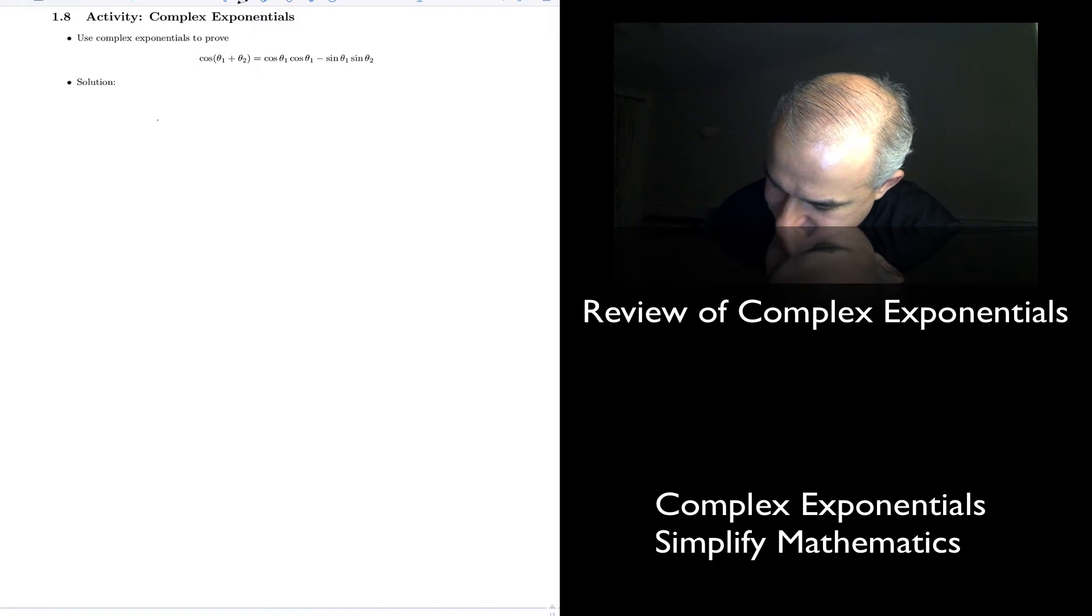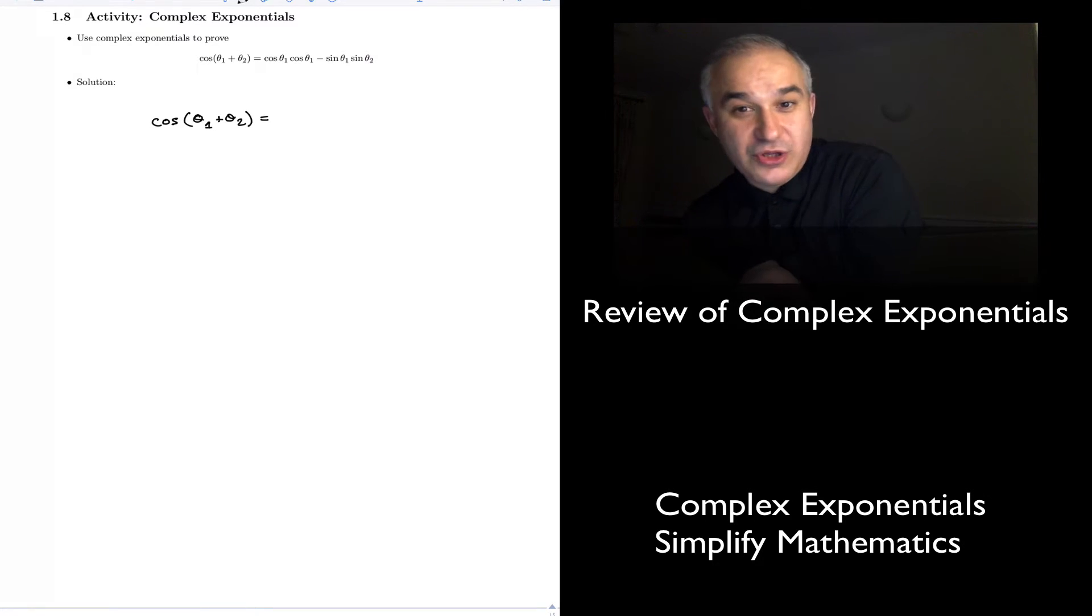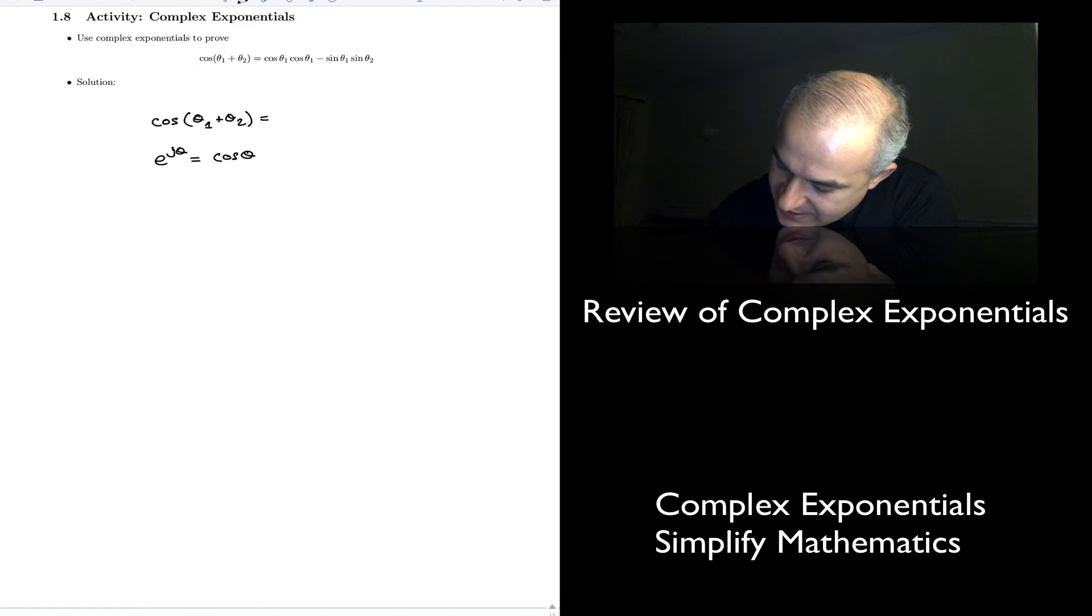So cosine of theta 1 plus theta 2. What can you do with cosines? Well, you are not able to move on. Now, the relationship between the cosine and the complex exponential is that, if you recall, e to the j theta equals cosine of theta plus j sine of theta.